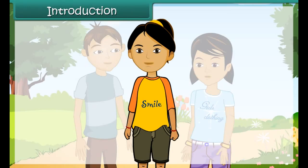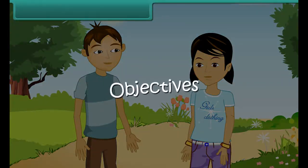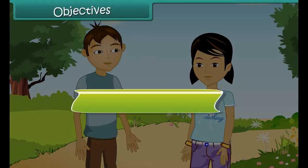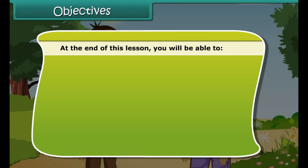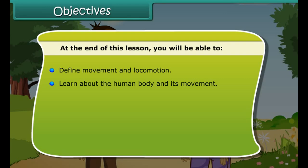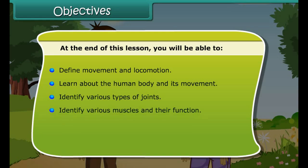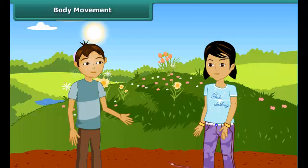Children, in this lesson, we will learn about body movement and the difference between movement and locomotion. At the end of this lesson, you will be able to define movement and locomotion, learn about the human body and its movement, identify various types of joints, identify various muscles and their function, identify movements in various animals, and identify the streamlined body.